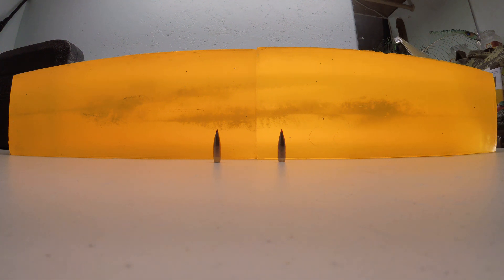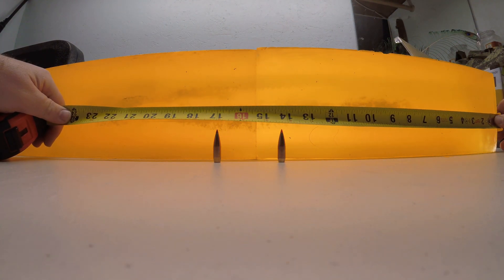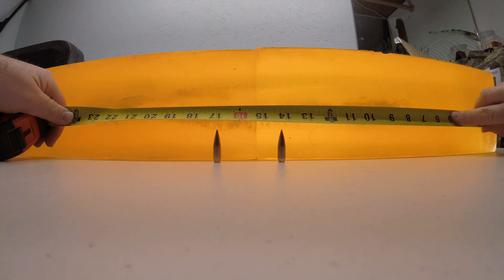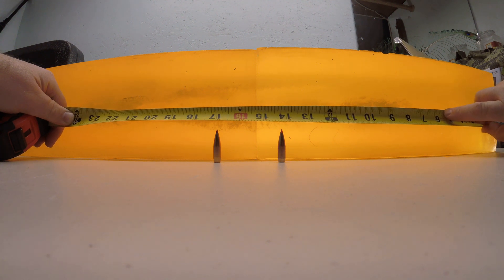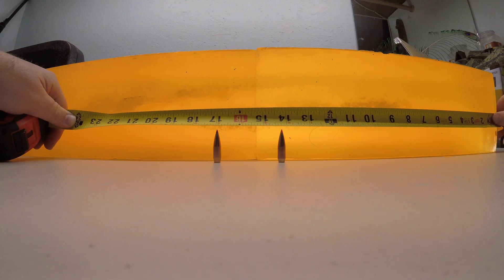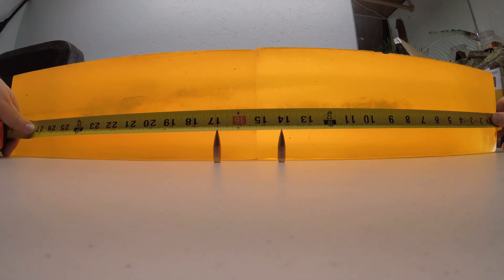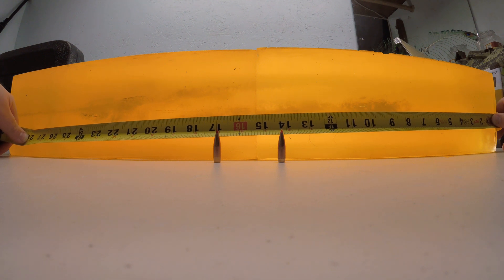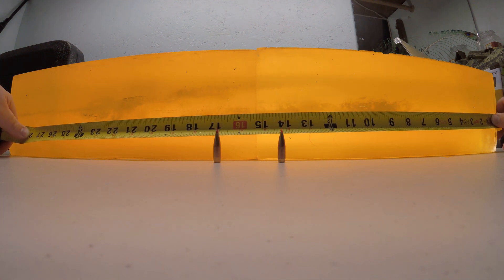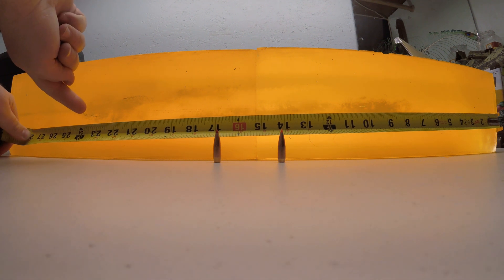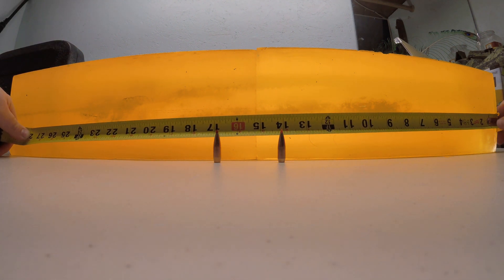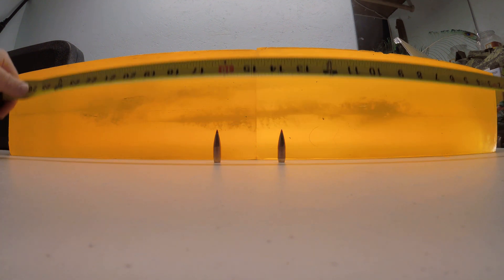Then we look at the 168 grain AMAX, and we are five and three eighths inches before the expansion starts. You get that heavy hemorrhaging and massive wound channel out to the 19 and a half inch mark. Here's where it exited the side of my block.